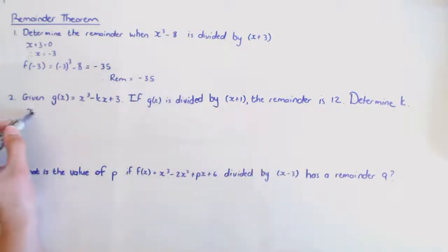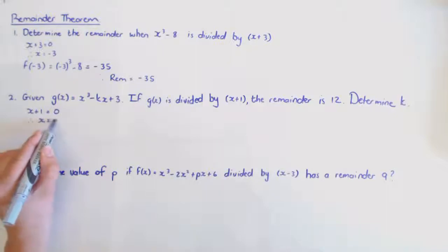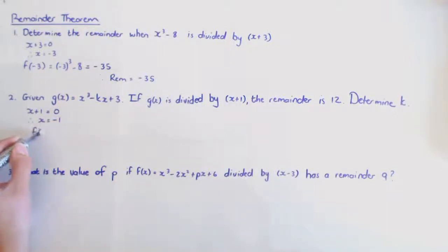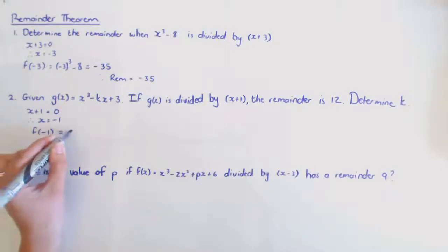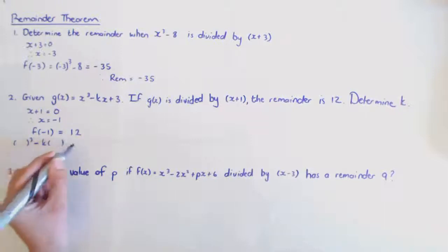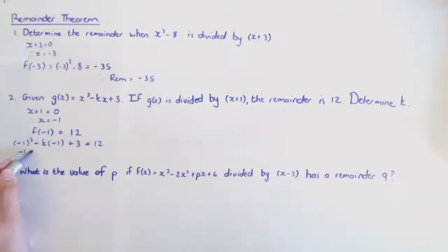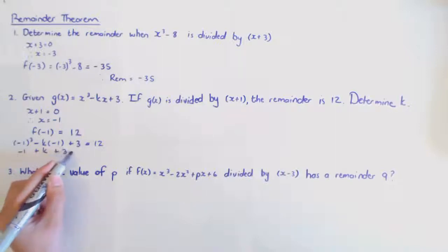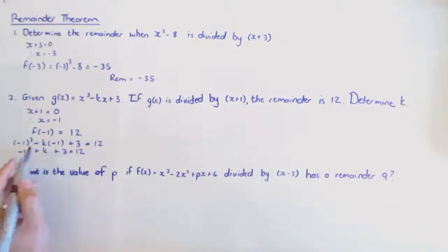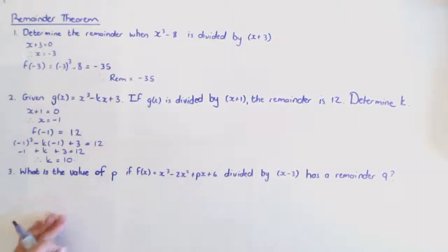I take x plus one, make that zero, giving x equals negative one. Substituting negative one into x cubed minus kx plus three should equal 12. That gives negative one plus k plus three equals 12, so 12 minus three plus one equals 10, meaning k equals 10.